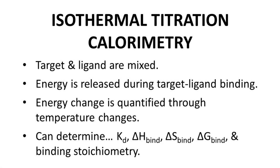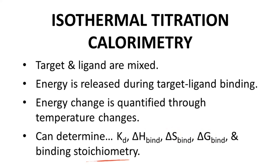The second method is isothermal titration calorimetry, or ITC. In ITC, the target and ligand are mixed, and temperature changes arising from the release of binding energy are measured. These temperature changes allow determination of KD as well as the thermodynamic changes — enthalpy, entropy, and free energy. The stoichiometry of binding, that's the number of ligand molecules binding to the target, can also be determined.